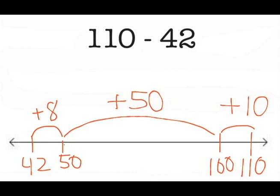Looking at what I've done, I have 50 plus 10 to make 60, plus 8 more, equals a difference of 68.